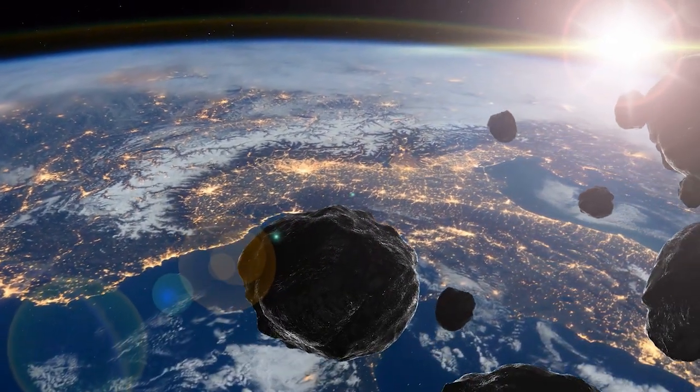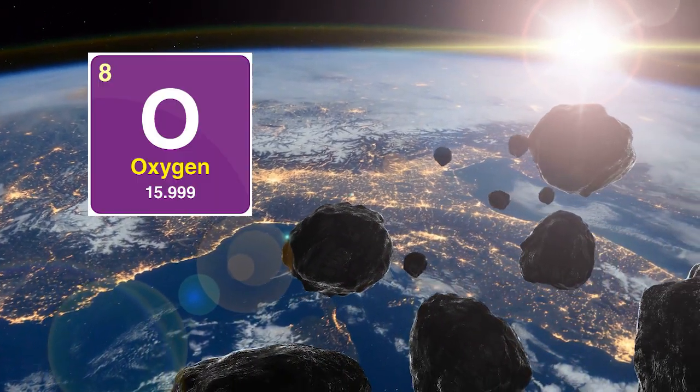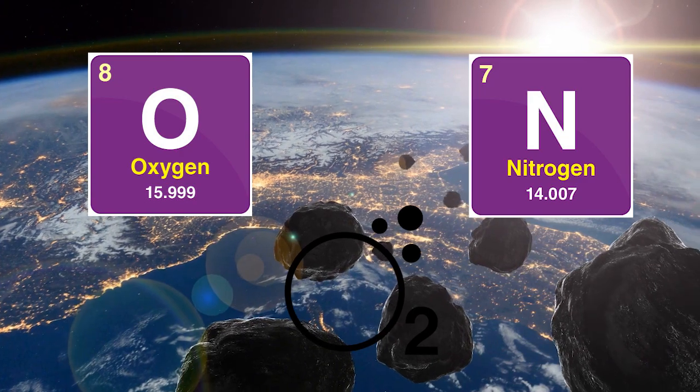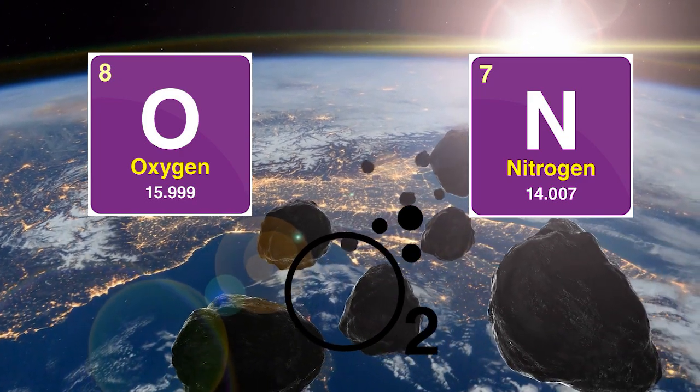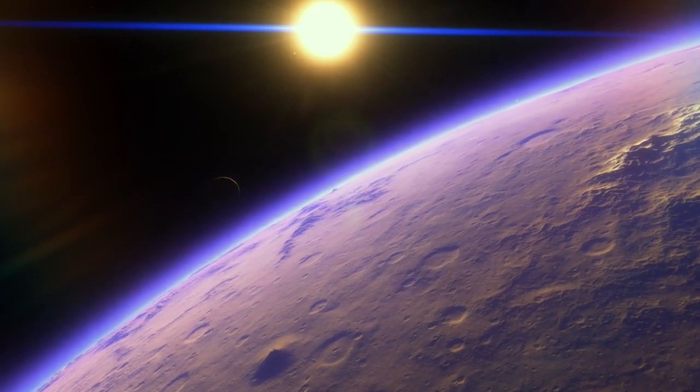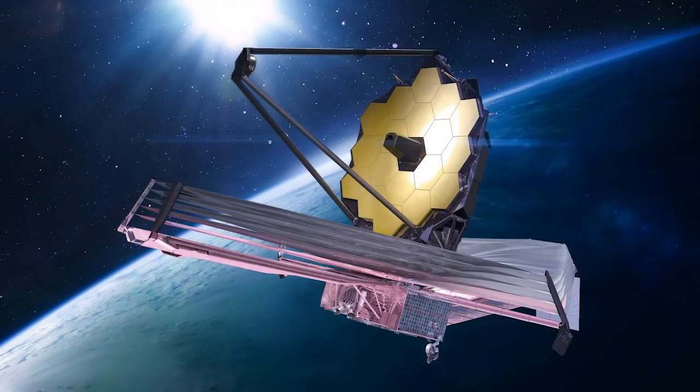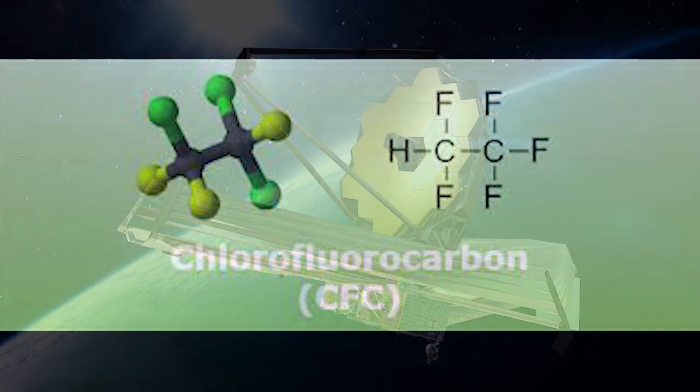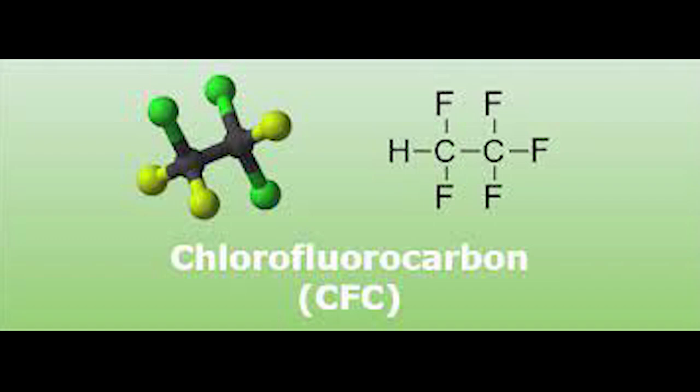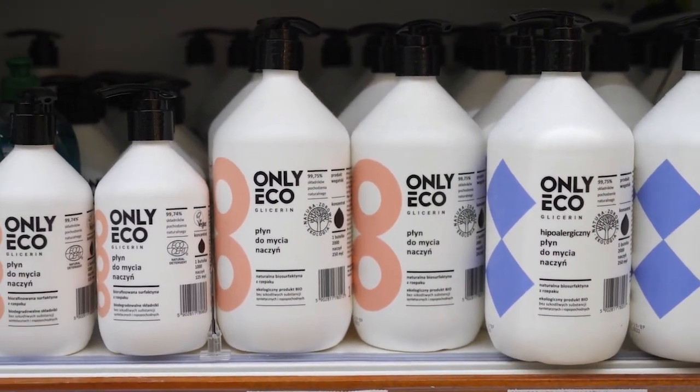On Earth-sized planets with atmospheres similar to our own, which are composed mainly of oxygen, nitrogen, and carbon dioxide, the presence of certain elements that are not usually present could indicate the presence of technologically advanced life. For example, the JWST could detect the presence of chlorofluorocarbons, or CFCs, which are used in refrigeration and cleaning products as a clear indication of civilization on a distant planet.